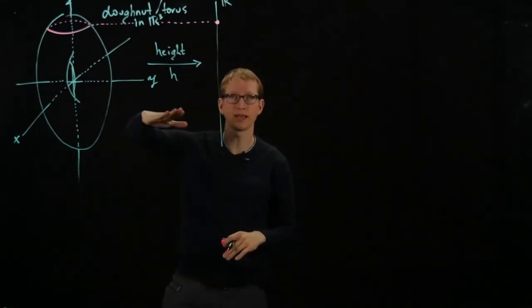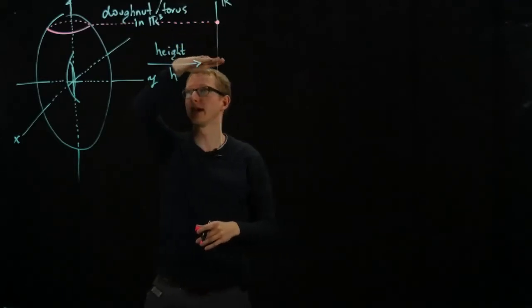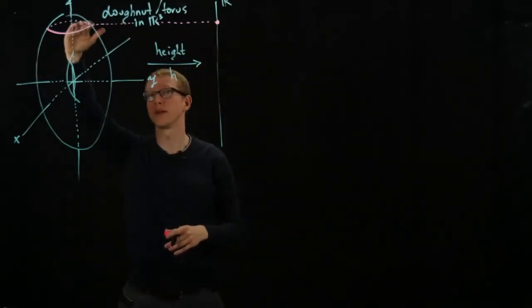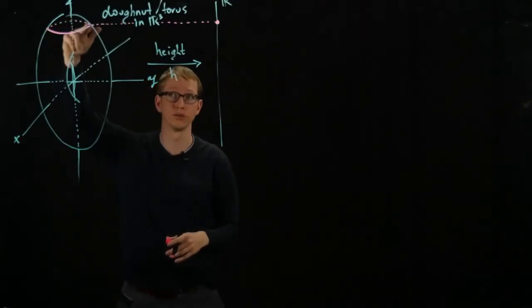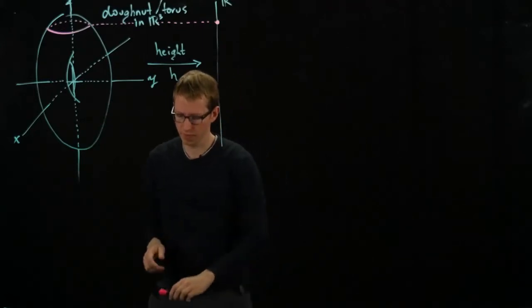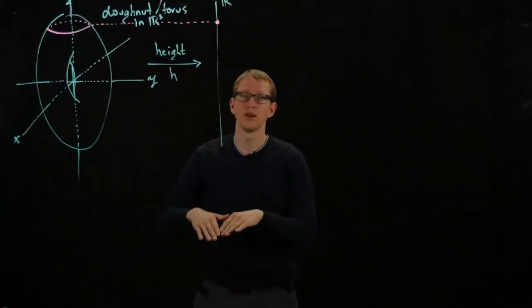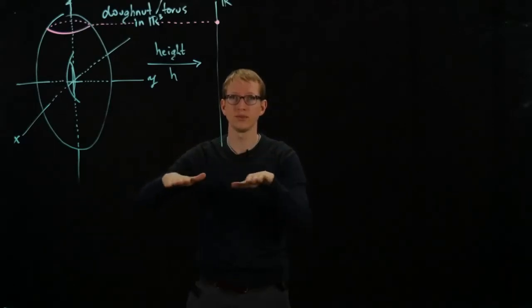So we take this slice. We can think of it as taking the x-y plane, shifting it to this height, whatever this height is, and then slicing this torus, and we look at that cross-section. And that cross-section looks something like a circle. And what happens, and what we want to look at is, we want to look at how this surface decomposes as we change the height and we take these cross-sections.